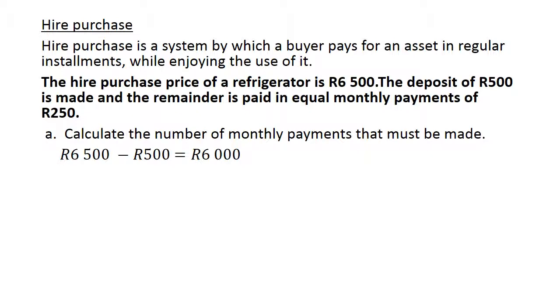Calculate the number of monthly payments that must be made. You take 6,500 minus the deposit of 500 Rand, which is 6,000 Rand. The number of installments will be 6,000 Rand divided by 250, and it gives you 24 installments.